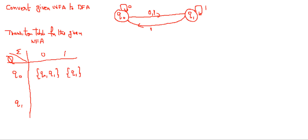After seeing 0 on q1, you are not going anywhere. On seeing 1 on q1, you are going to q0 and also q1. So this is the transition table for the given NFA.